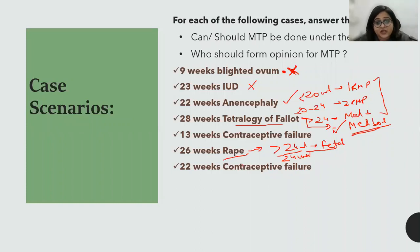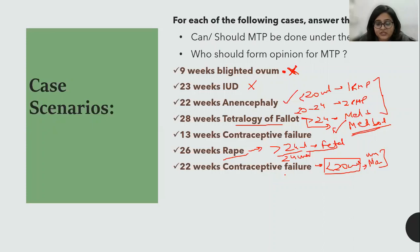Next scenario: 22 weeks contraceptive failure — yes or no? No. For contraceptive failure, the upper limit is only 20 weeks. What has changed here is that contraceptive failure is now applicable to both married and unmarried women, but only up to 20 weeks.